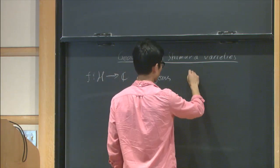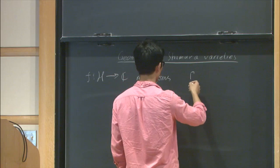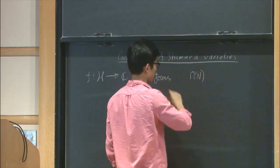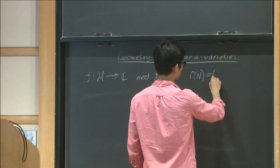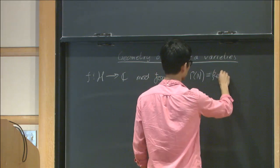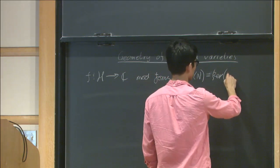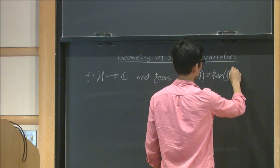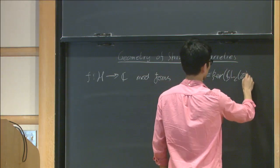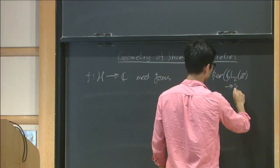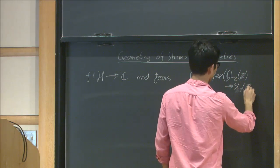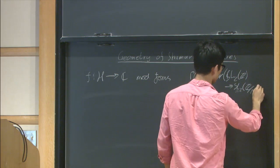This is a holomorphic function on the upper half plane which satisfies a functional equation with respect to an action of a congruence subgroup, and a congruence subgroup is a subgroup of SL2Z which contains these principal congruence subgroups gamma n. This is the kernel of the map from SL2Z to SL2Z mod nZ.